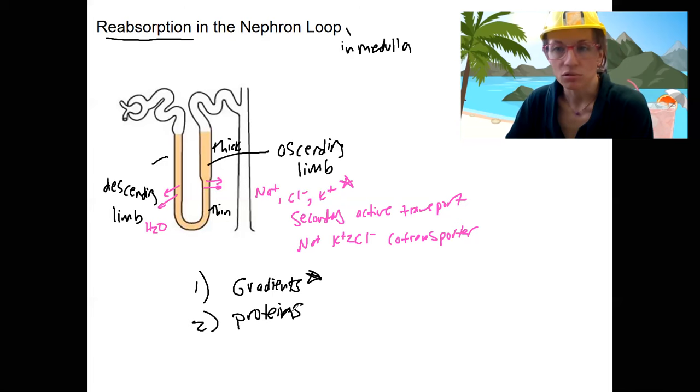But even for other ions, right, sodium can't move through the cell membrane without a protein. So these are the two things we're going to look at everywhere in the body, but especially here at the nephron loop.